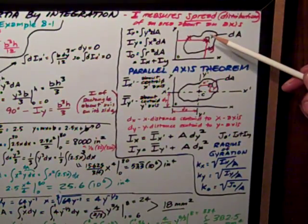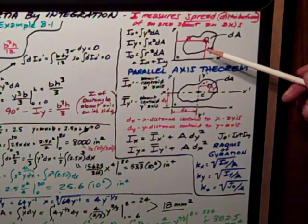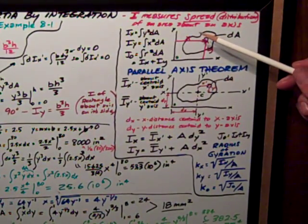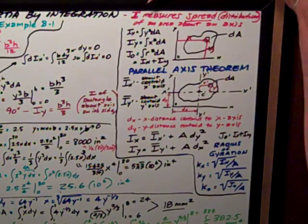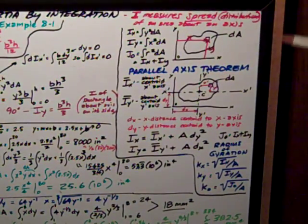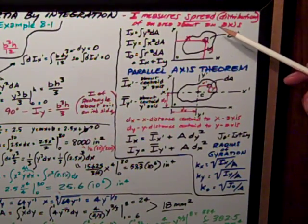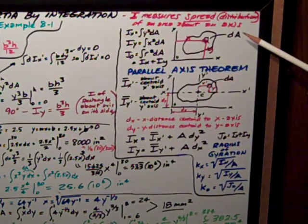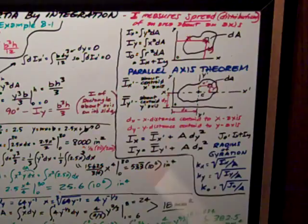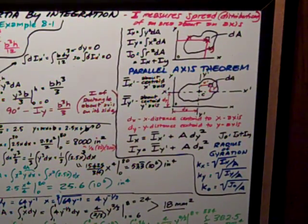It's the second moment of the area, and that's kind of the math term for it. We use the letter I to designate the moment of inertia. What the moment of inertia does is it measures the spread or the distribution of an area about an axis. The further away the area is from the axis, the bigger the moment of inertia.